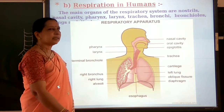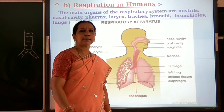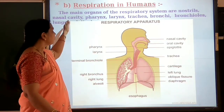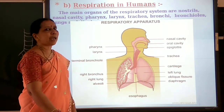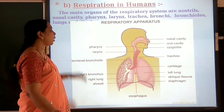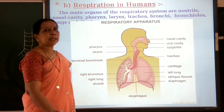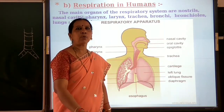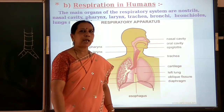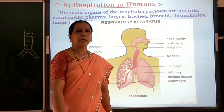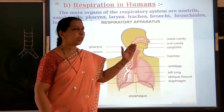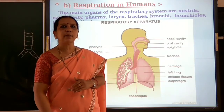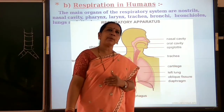This is the human respiratory system. The important parts are: nasal cavity, pharynx, larynx, trachea, bronchi, bronchioles, lungs and air sacs or alveoli. We have discussed how respiration occurs. The remaining parts — transportation and excretion — have already been discussed in previous classes. This completes the lesson.